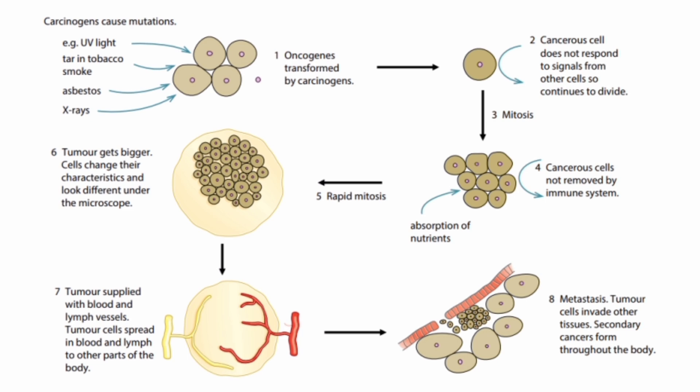Metastasis is the stage at which a patient typically discovers they have cancer. By this point, the immune system is weak and cancer cells no longer respond to any signals. Cancer is very dangerous because it cannot simply be repaired — it is a serious and life-threatening condition.